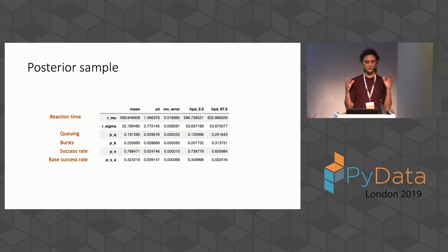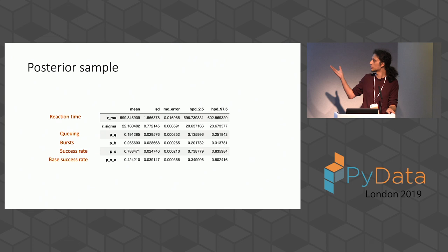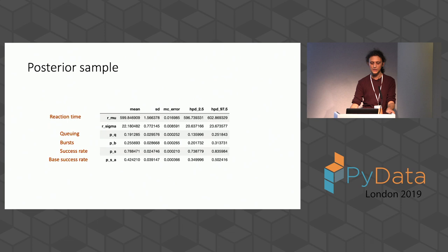After this, we can look into all the other model parameters to answer our questions: the distribution of our reaction time, how often we are queuing, how many bursts there are, what our success rate is, and finally — if we were extremely late to react — how bad would our success rate be? What's the absolute worst-case scenario?